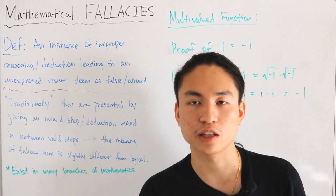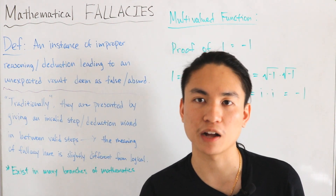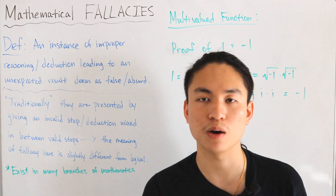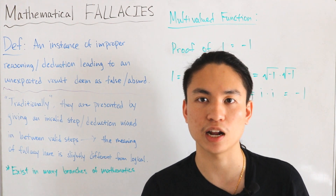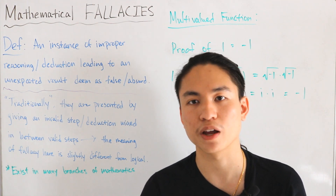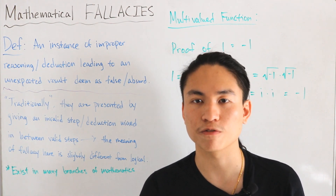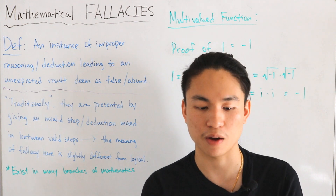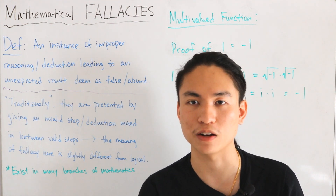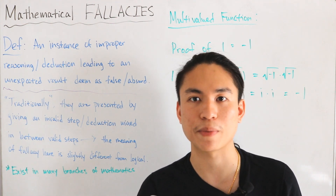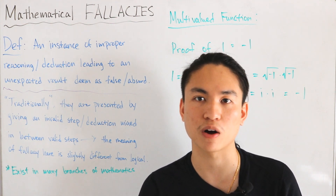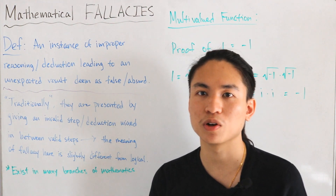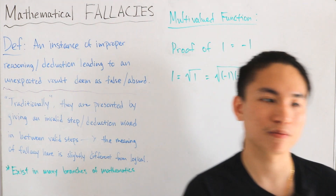That covers all the examples I wanted to go over. I know there are also geometry fallacies and proof-by-induction fallacies that I didn't cover, but if you know of any other interesting fallacies, feel free to comment below. That's pretty cool stuff!